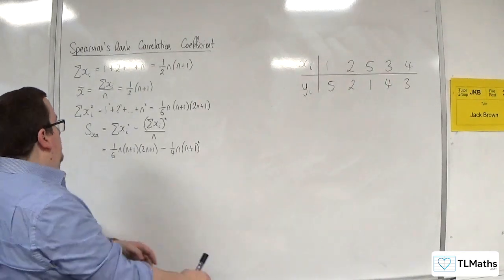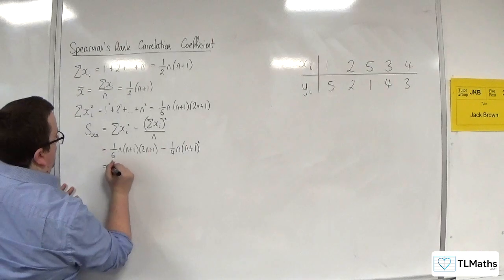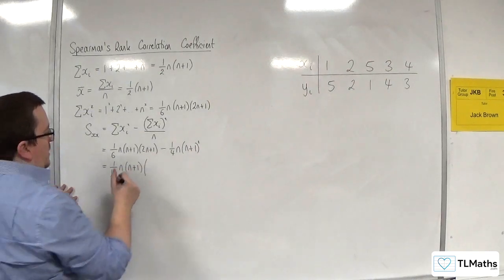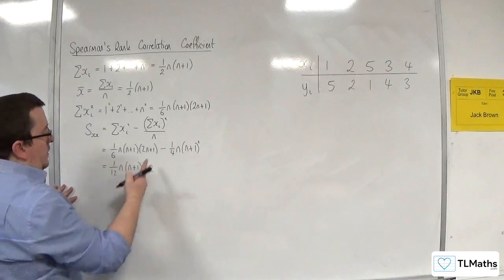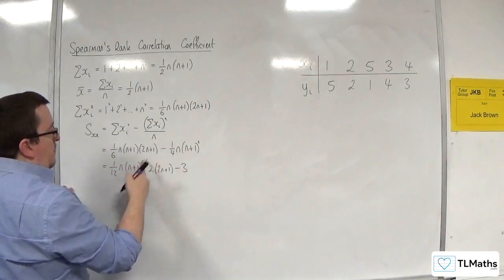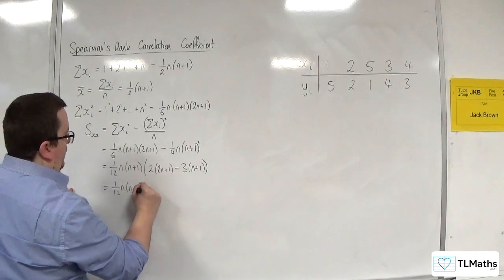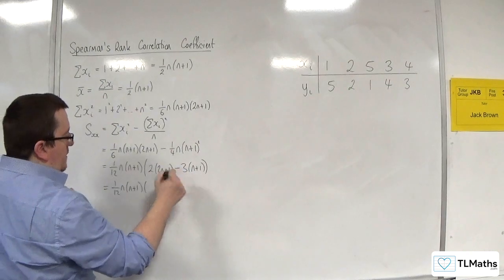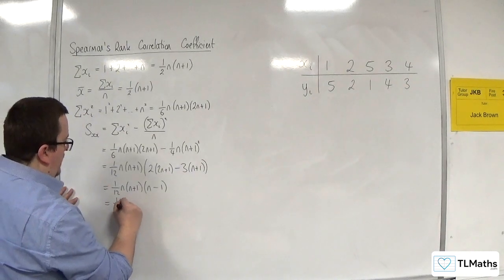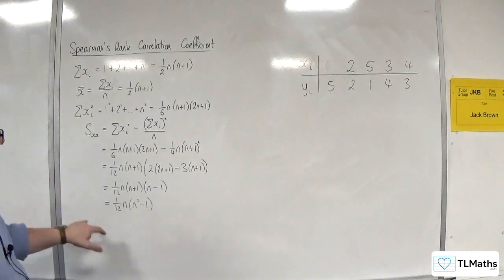Now I'd like to simplify that. I've got one-sixth and one-quarter, so I'm going to factor out one-twelfth. They both have an N and an (N+1), so factoring that out gives me 2 — because 2 twelfths make the sixth — times (2N+1), take away 3 — because 3 twelfths make the quarter — times (N+1). Expanding: 4N − 3N = N, and 2 − 3 = −1. So we get Sₓₓ = ¹⁄₁₂ N(N+1)(N−1) = ¹⁄₁₂ N(N²−1).